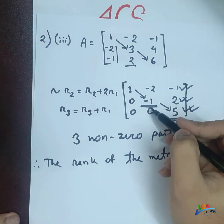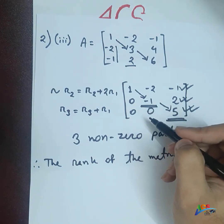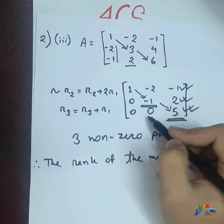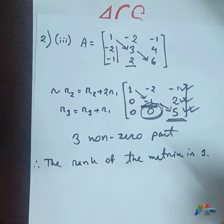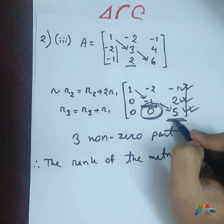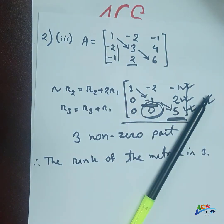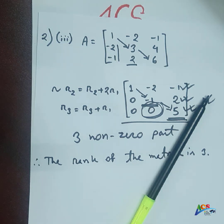This completes the row operation method portion. Row 2 and row 3 elimination using the leading diagonal technique — that's the full method using row echelon form. This tutorial class covers Chapter 1 completely. Thank you everyone, and I hope this was helpful. See you next time!